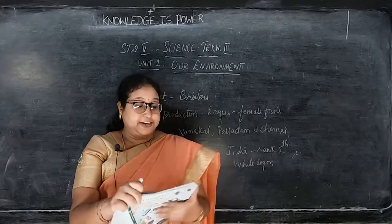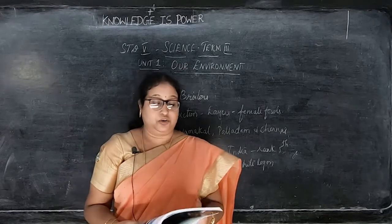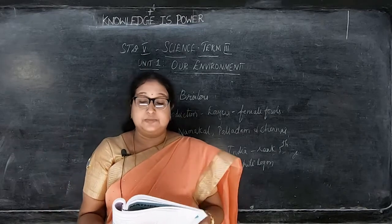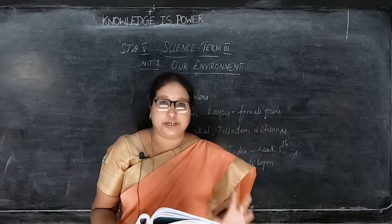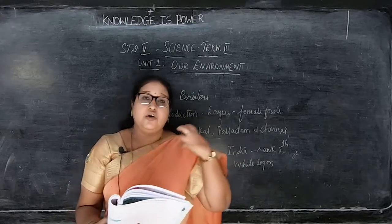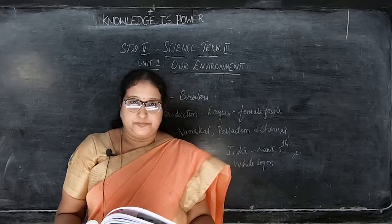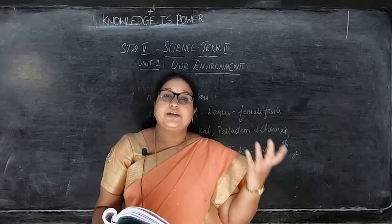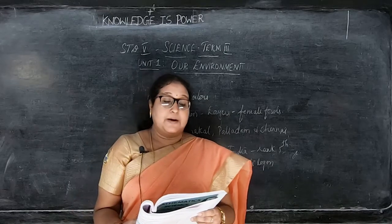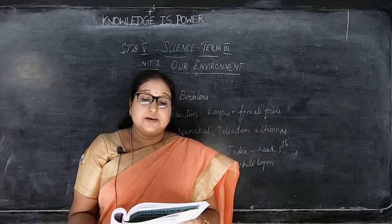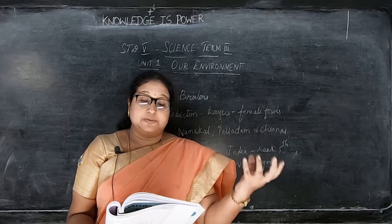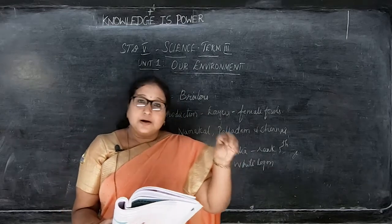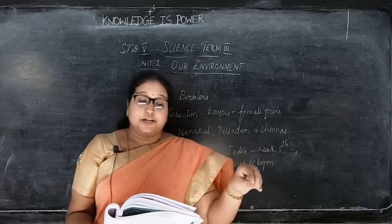Next is feeding. Poultry birds need proteins, carbohydrates, fats, minerals and vitamins for egg and meat production. If they eat nutritious food with proteins and carbohydrates, they yield more egg and meat. Bajra, barley, maize, wheat, rice bran, jowar and vegetables are the feed given to poultry birds. These are the nutrients given to the poultry for egg and meat production.